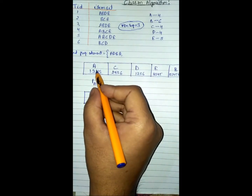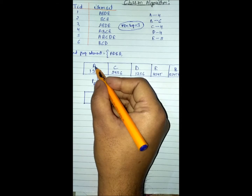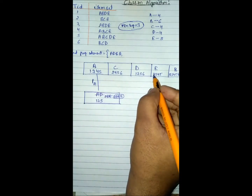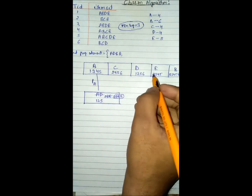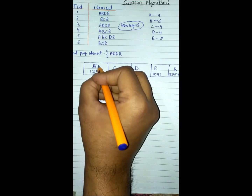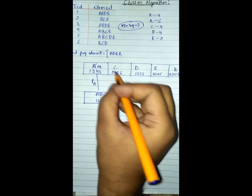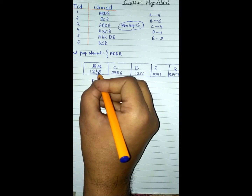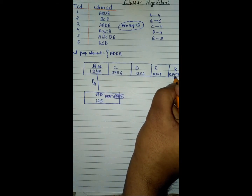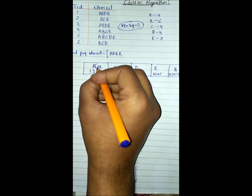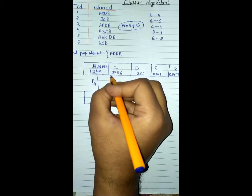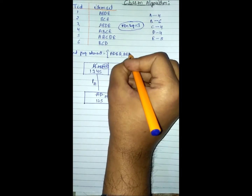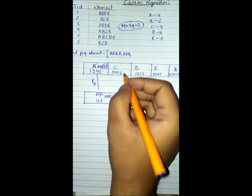We return to A. AD is done, so we check A and E: common transactions one, three, four, five. One, three, four, five is a subset of one, two, three, four, five, so we replace A with AE. We check AE with B: one, three, four, five is a subset of one, two, three, four, five, so we replace AE with AEB. This is our second closed frequent itemset: AEB.